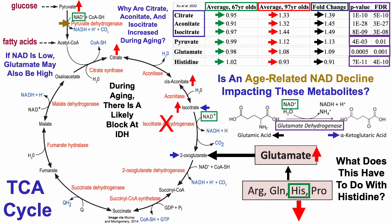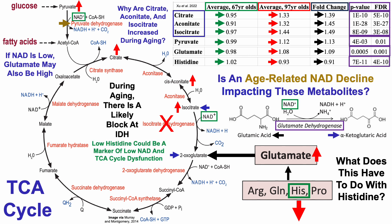So why would that be the case? If NAD levels are relatively low, there may be an increased degradation of histidine into glutamate to try to get around that age-related block caused by low NAD levels. Conversely, if NAD levels are high, we'd expect to see high histidine — which, as I just showed, was also associated with a reduction in all-cause mortality risk. So high NAD potentially means high histidine, because you wouldn't need to convert it into glutamate. With that in mind, low histidine could be a marker of not only low NAD, but also TCA cycle dysfunction.